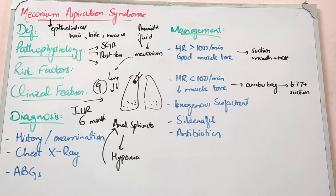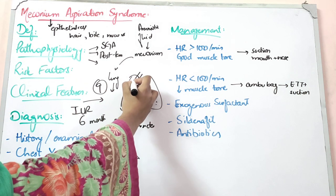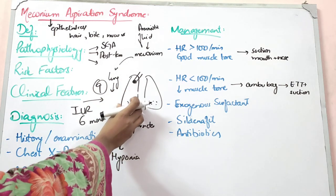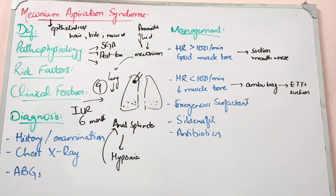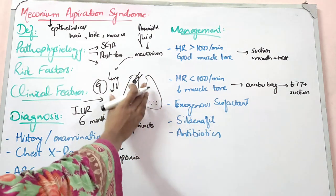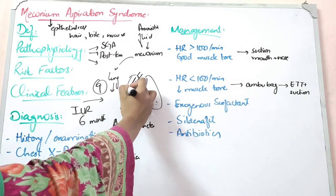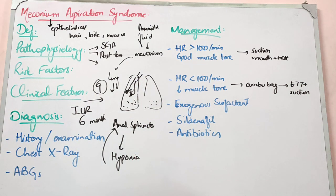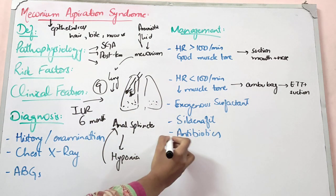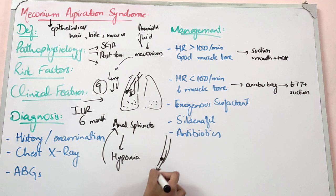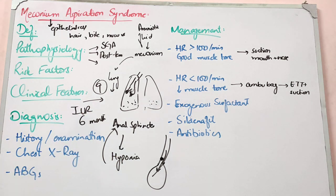When meconium is aspirated into the lungs, the outcome depends on where the meconium settles. If the airways are completely obstructed, the lungs will collapse — this is atelectasis. When the child cries after birth, the lungs expand; if obstruction prevents this, atelectasis results. Where there is partial obstruction, air can enter but cannot exit, causing air trapping and hyperinflation of the lungs.